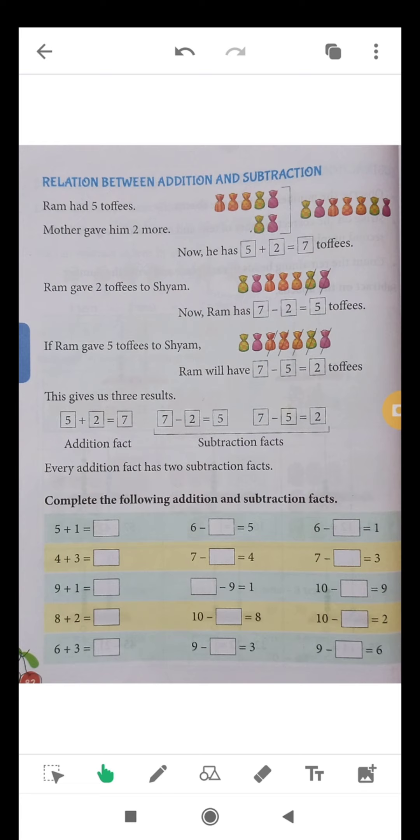7 minus 2 is equal to 5. 7 minus 5 is equal to 2. These are subtraction facts.